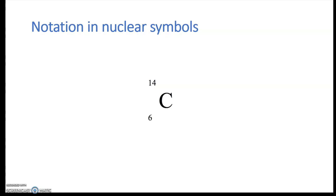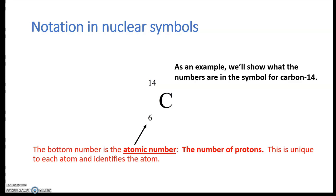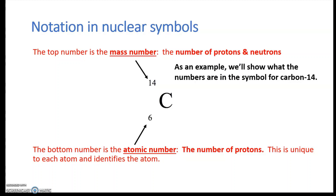We need to know how to work with symbols in these equations. We must not mix up atomic number and atomic mass — things that sound alike. As an example using carbon-14: the bottom number is the atomic number, which is the number of protons and is unique to each element. The top number is the mass number — the number of protons and neutrons together. Be careful not to mix these up when doing calculations.